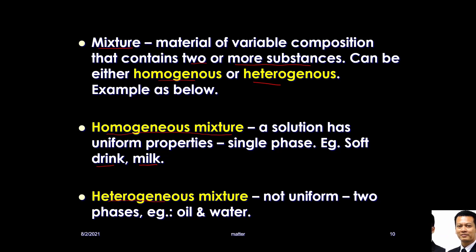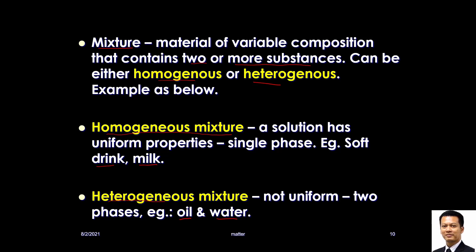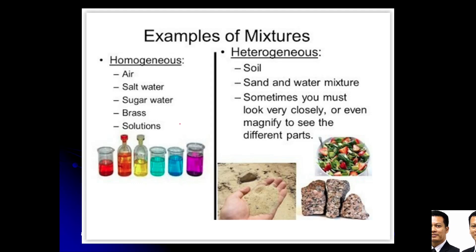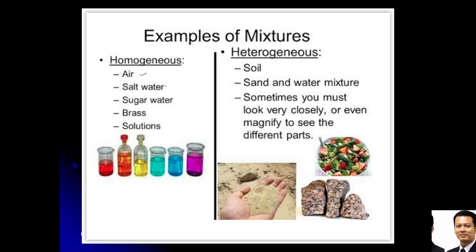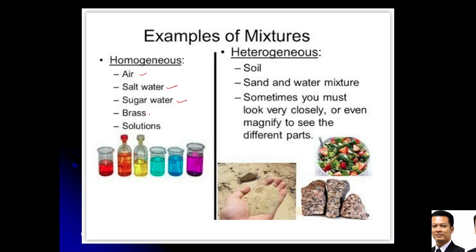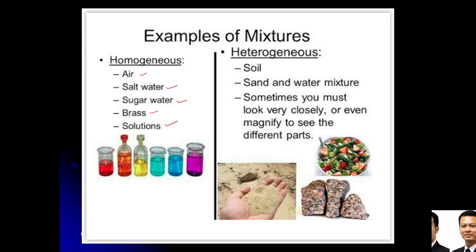In a heterogeneous mixture, you can see the boundary or layer between components. For example, if you mix oil with water, you can see water at the bottom and oil at the top, since oil is less dense than water — that is the difference. Examples of homogeneous mixtures include air (you cannot see the separation between nitrogen, oxygen, and other gases), salt water, sugar water, brass (an alloy of two metals), and solutions like sodium carbonate solution or HCl solution.